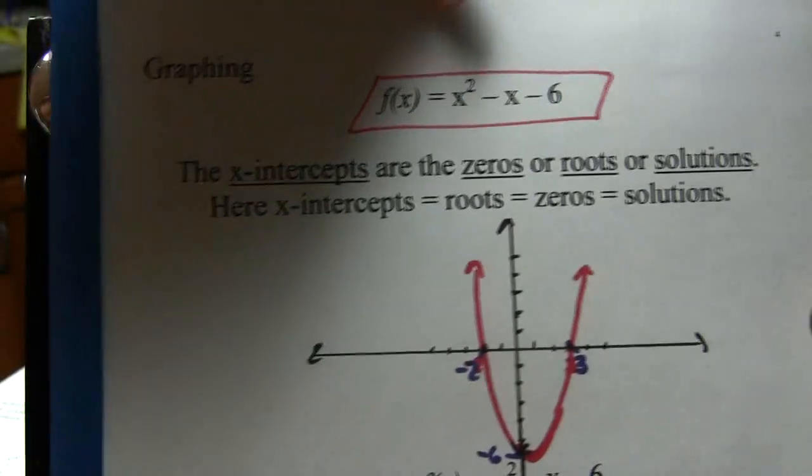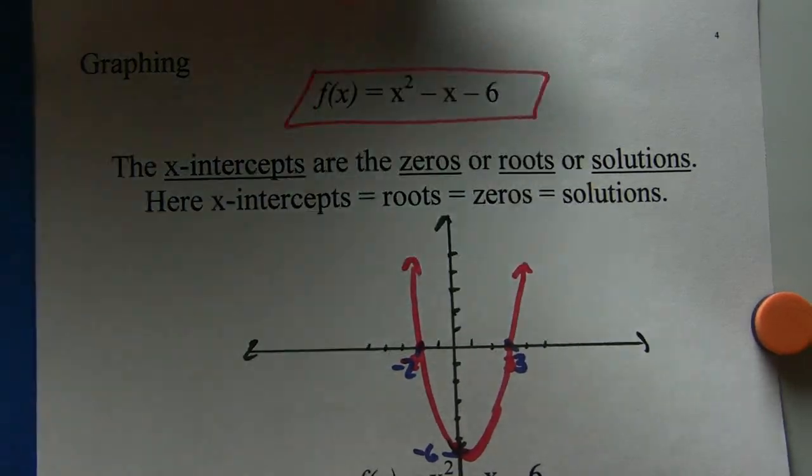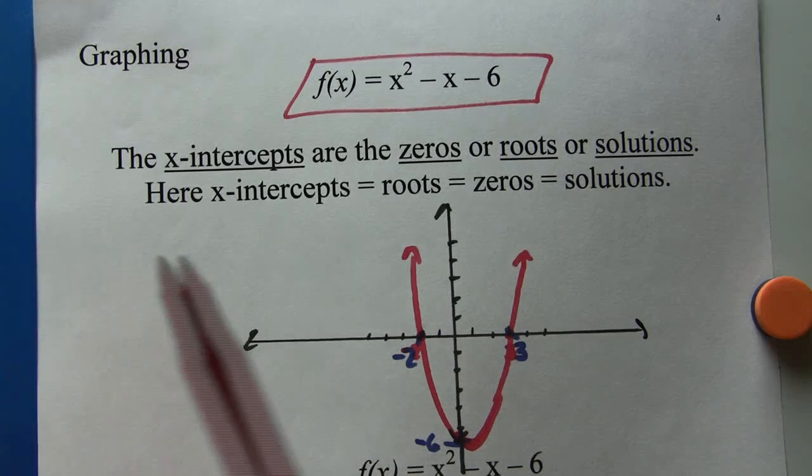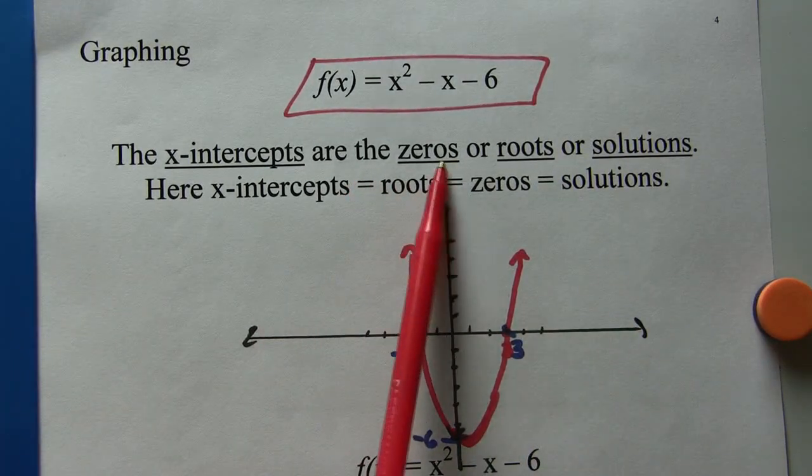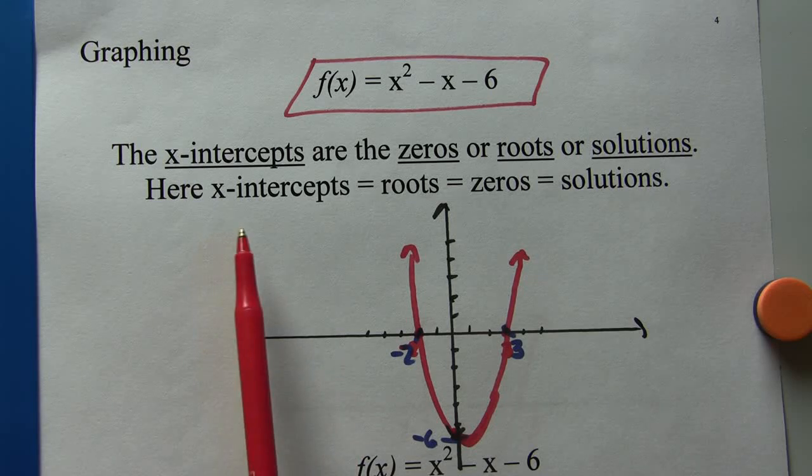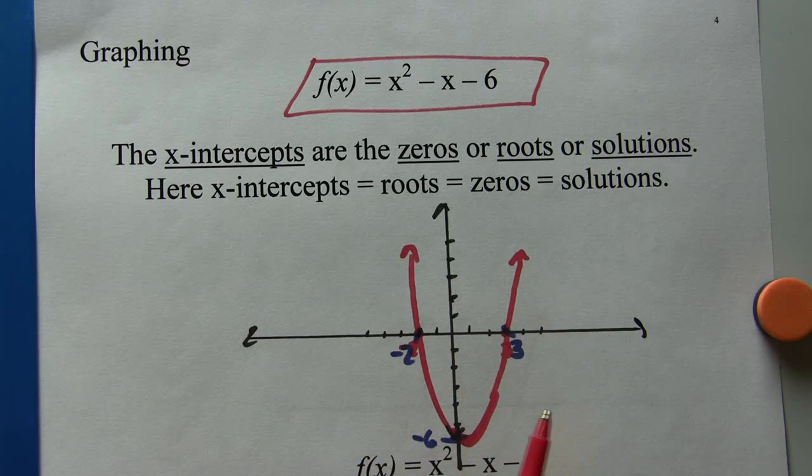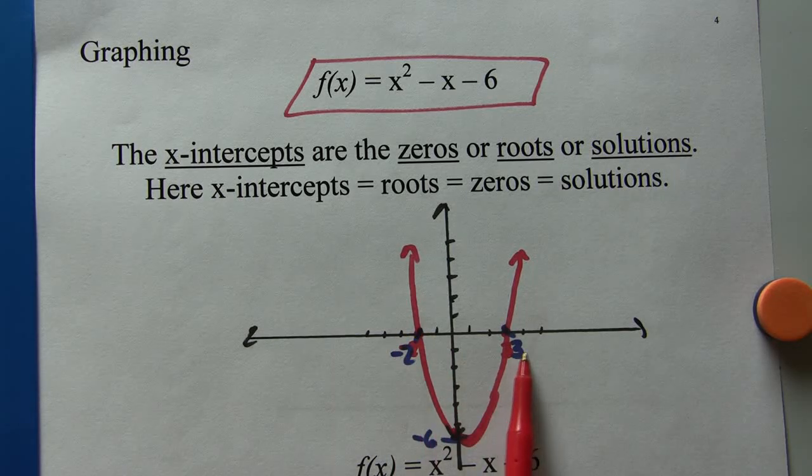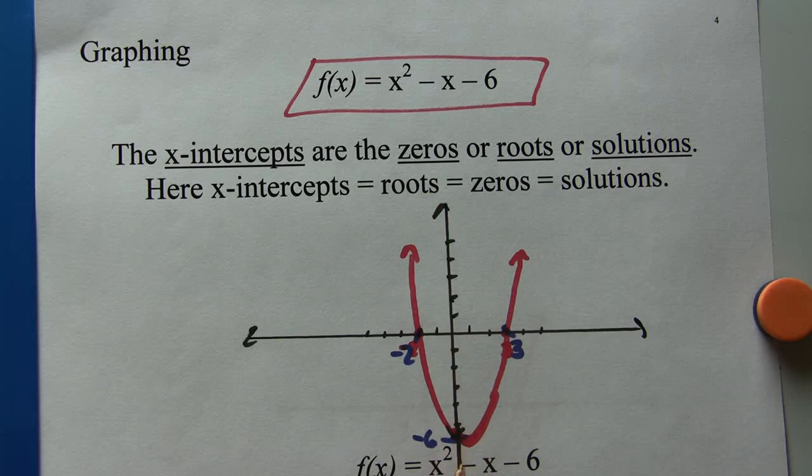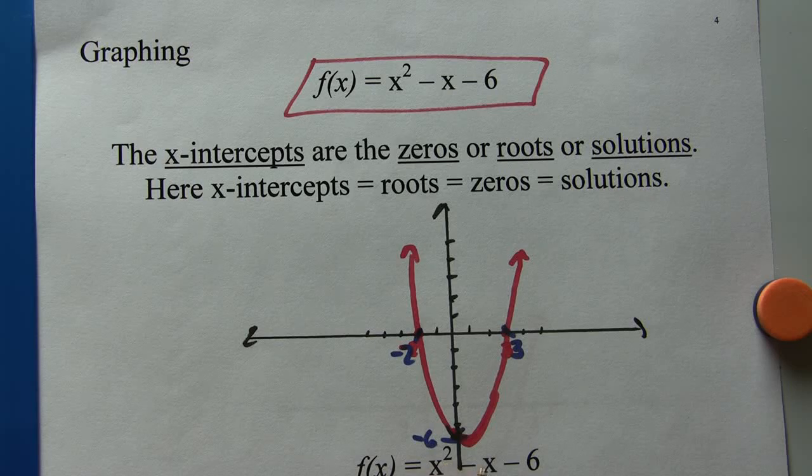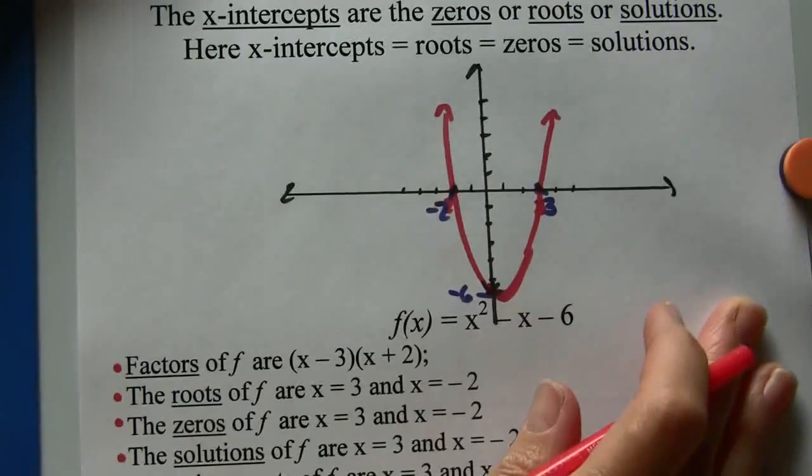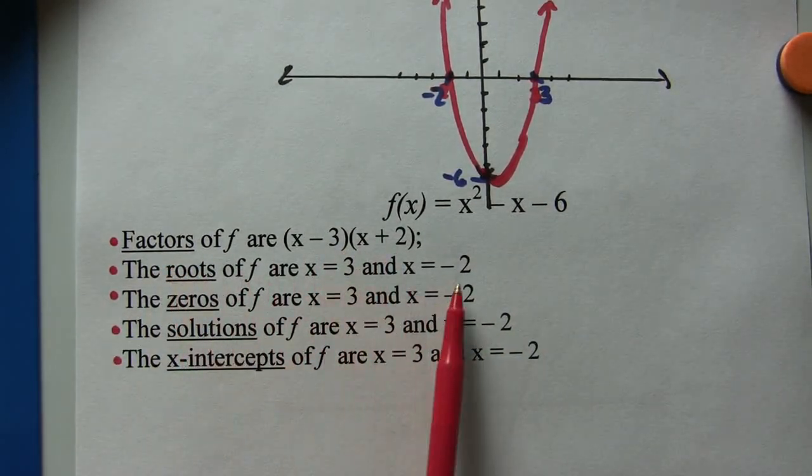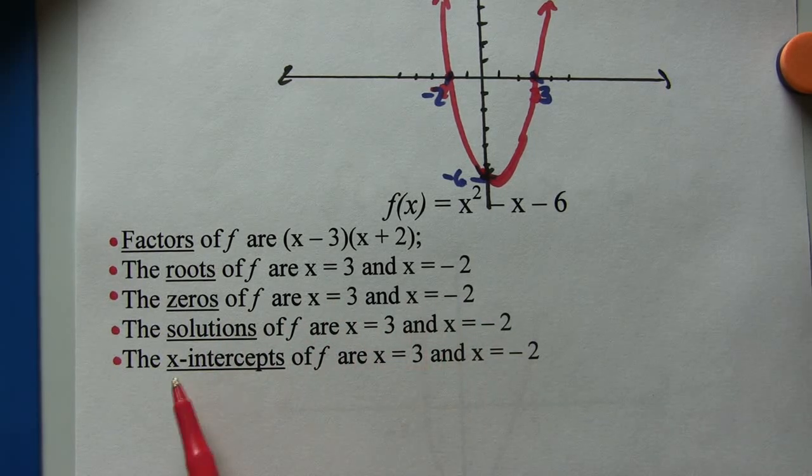Let's look at graphing. Let's look at keeping everything straight here. Let's look at graphing this function. The x-intercepts are the zeros or the roots or the solutions. So we can graph it. You can do this on a graphing calculator. You can plot points however you'd like. You're going to find that it crosses the x-axis at negative 2 as well as positive 3. It will cross the y-axis at negative 6. So for the function f of x equals x squared minus x minus 6, we have found the factors, we found the roots, we found the zeros, we found the solutions, and we found the x-intercepts.